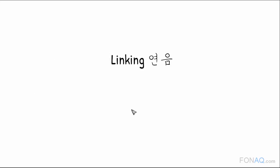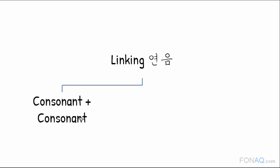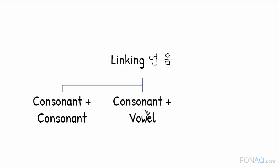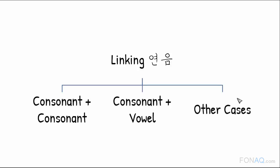Linking also appears in English. In this unit, we'll briefly look at three types of linking: consonant plus consonant linking, consonant plus vowel linking, and other types of linking.